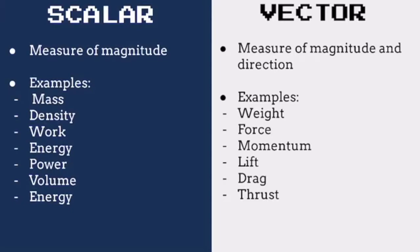Vector quantities have both magnitude and direction. In addition to a numerical value, a vector also includes the direction of the numerical value associated with it. Some examples of vector quantities are weight, momentum, and drag.